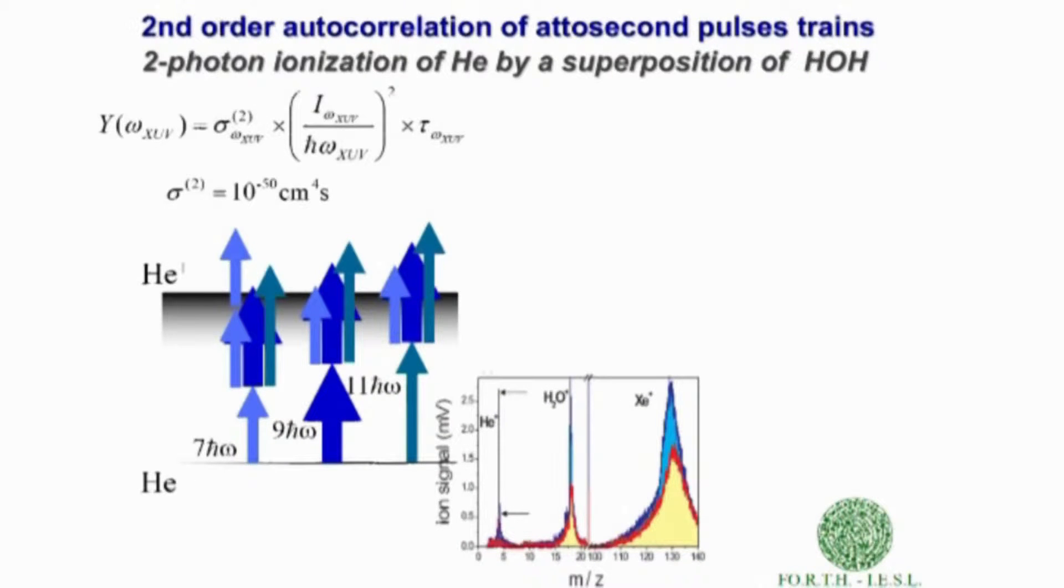The spectrum shown is a measured mass ion spectrum. You see three mass ion peaks. From right to left, the first peak is xenon. Xenon is the nonlinear medium where harmonics are generated, and thus xenon atoms are present everywhere in the vacuum system. The second peak is water. Water is the rest gas in our vacuum system. And the third peak is helium plus. Helium is two-photon ionizing for the photon energies used, meaning 7th to 11th harmonic.